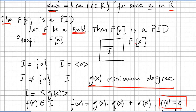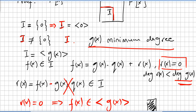Now we take an ideal I in F[x]. We have two possibilities: either the ideal is only the element 0 — the set containing just 0 — and in that case the ideal has the form R·0; or the ideal is not only the element 0, and then the ideal will contain some polynomials.